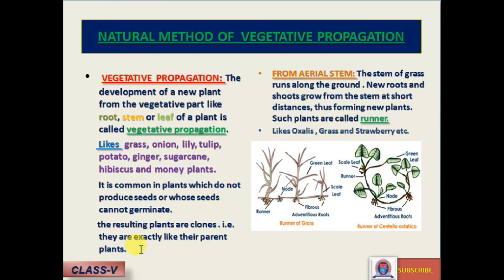Vegetative propagation also occurs from aerial stems. The stem of grass runs along the ground, and new roots and shoots grow from the stem at short distances. Such plants are called runners.